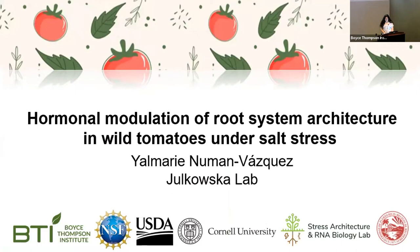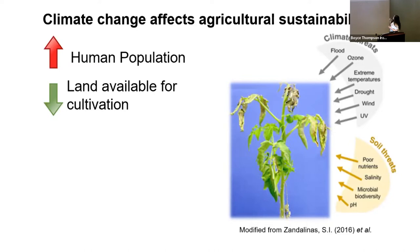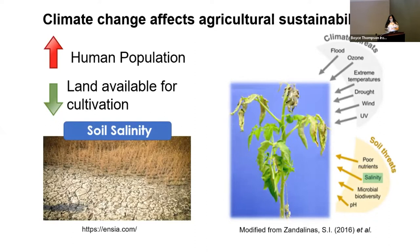The increase in human population and reduction in land available for cultivation are two threats for agricultural sustainability. This causes environmental stress responses such as extreme temperatures, droughts, high winds, and soil salinity. Soil salinity is when soluble salts get retained in the soil, and this can occur either naturally or because of improper human activity, particularly farming.